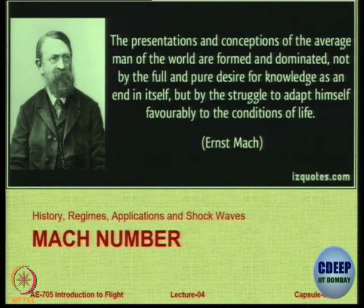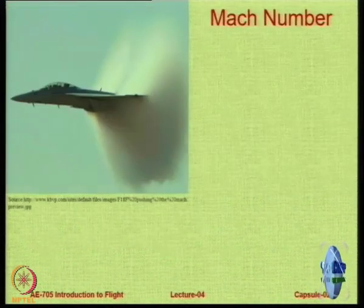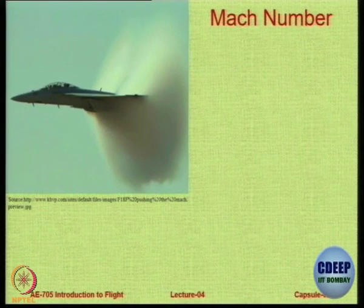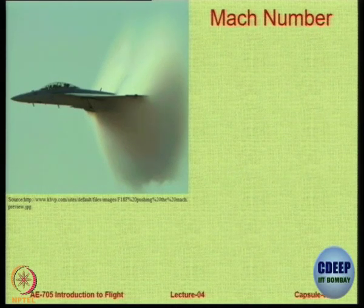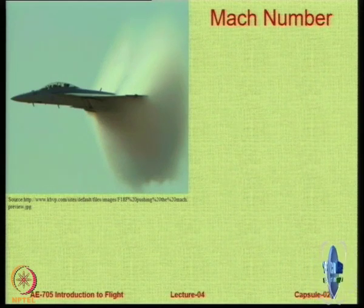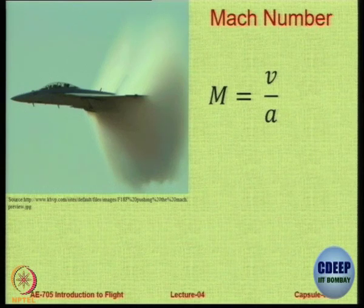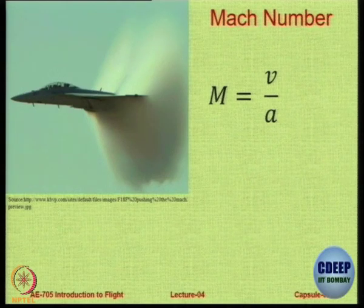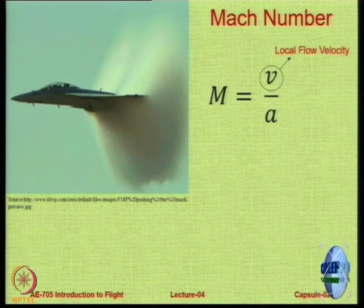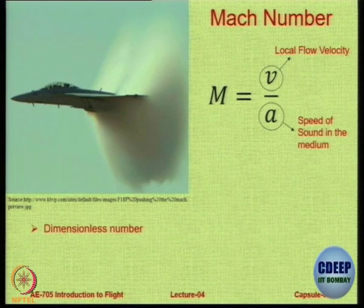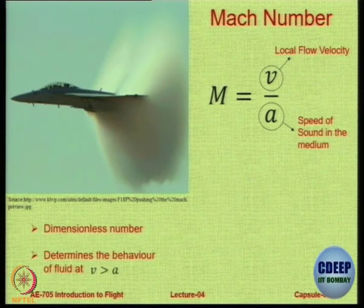Now we look at Mach number. Mach number, as all of you know, is very useful when we look at high speed flow. Here is an example of the effect of high speed flow on the pressure acting on the surface — condensation of atmospheric water vapor due to differences in pressure. Mach number is the ratio of the flow stream velocity and the speed of sound under those conditions — a ratio of local flow velocity to the sonic speed in that medium. It is a dimensionless number and it determines the behavior of the fluid when the velocity is more than speed of sound.